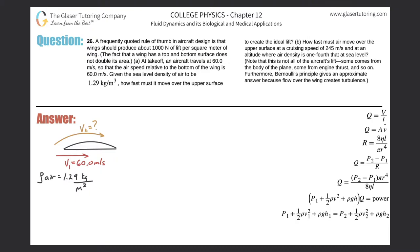Number 26. A frequently quoted rule of thumb in aircraft design is that wings should produce about 1,000 newtons of lift per square meter of wing. The fact that a wing has a top and bottom surface does not double its area. Letter A: At takeoff, an aircraft travels at 60 meters per second so that the airspeed relative to the bottom of the wing is 60 meters per second. Given the sea level density of air to be 1.29 kilograms per cubic meter, how fast must it move, meaning the air, over the upper surface to create the ideal lift?